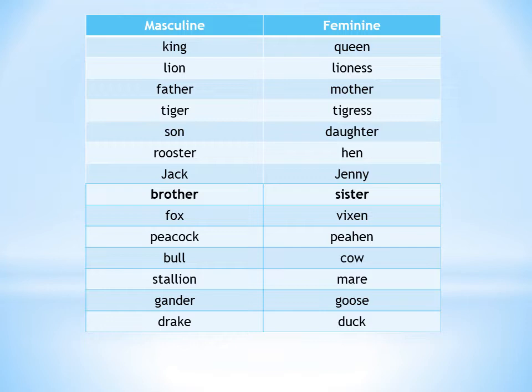Son — Daughter. Rooster — Hen. Jack — Jenny. Brother — Sister. Fox — Vixen. Peacock — Peahen. Bull — Cow. Stallion — Mare. Gander — Goose. Duck — Drake.